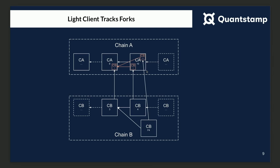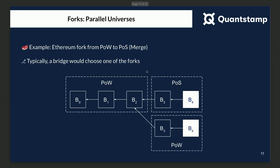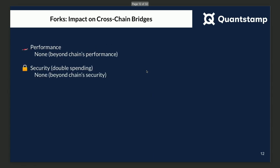One important thing is to keep track of forks, because you never know when chain reorganization may occur. A good example is a recent fork on Ethereum, where we went from proof-of-work to proof-of-stake. And if you run a bridge from Ethereum to somewhere else, the bridge would have to pick one of those forks. Typically, there is no impact besides what the source chain promises in terms of performance and security.